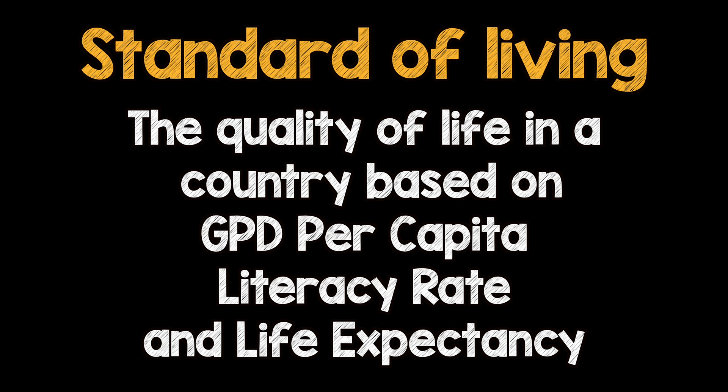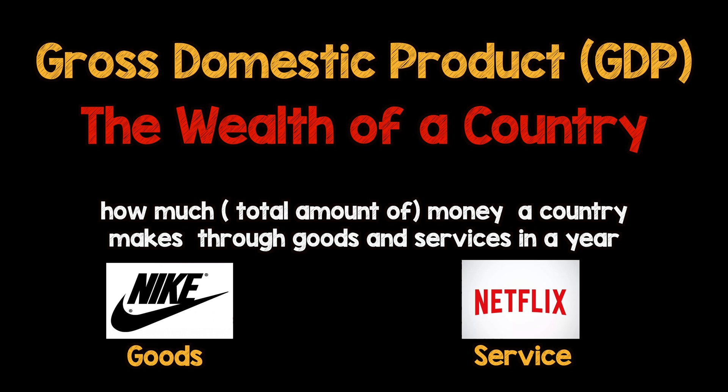So what is GDP per capita? Before we understand that, we need to look at what GDP means. GDP is short for gross domestic product — and we don't mean gross in the sense of being disgusting. We mean gross in the sense of total. To keep it simple, GDP is basically the wealth of a country — how much money a country makes through goods and services in a year.